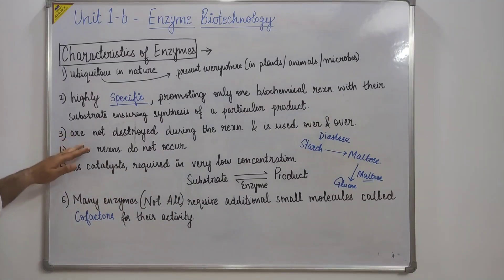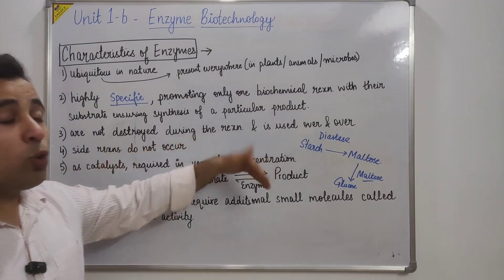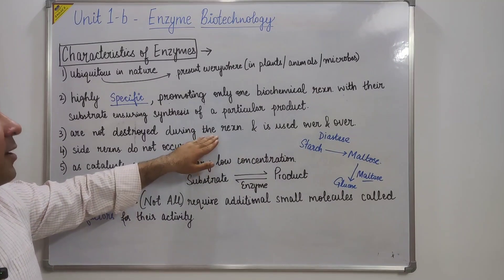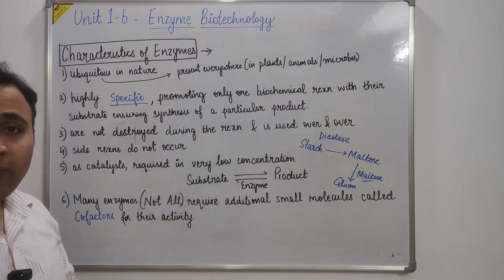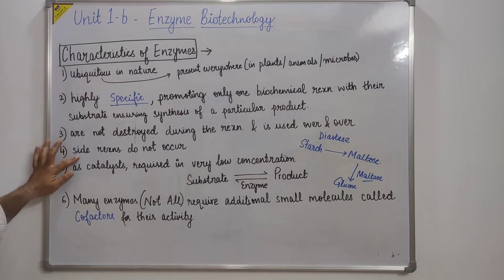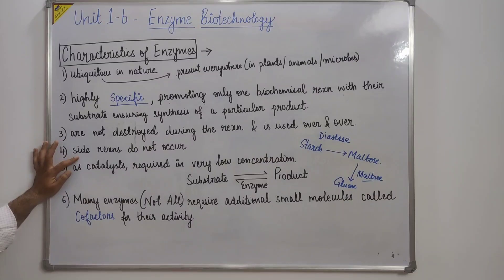Third, enzymes are not destroyed during the reaction. This is the property of a catalyst — it does not get destroyed so it can be used over and over again. This means if we use an enzyme for a commercial process it will be cost-effective. Also, side reactions do not occur, because if an enzyme is specific in nature it knows which substrate to bind, so it will not produce any side reactions or side metabolites.